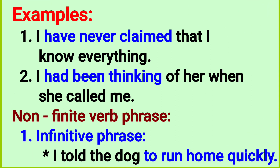Examples of finite verb phrase: 'I have never claimed that I know everything' — 'have claimed' is the verb phrase. 'I had been thinking of her when she called me' — 'had been thinking' is the verb phrase.